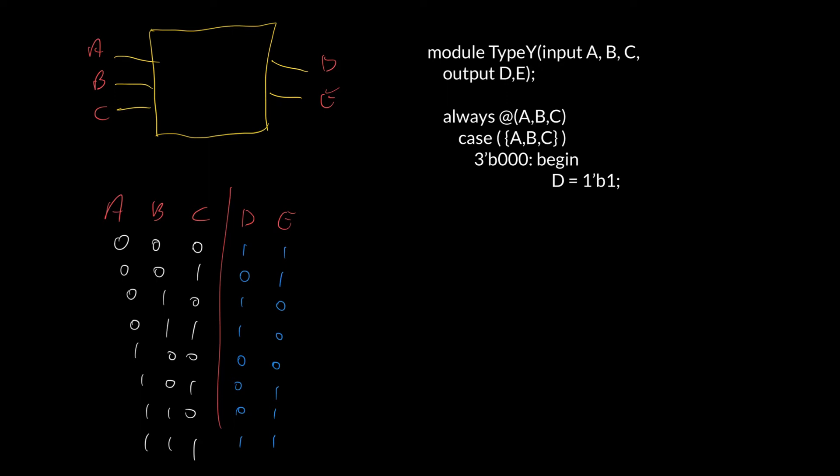Otherwise, it's going to have to truncate that 32-bit number to fit into the one-bit D, and you might get a compiler warning. So, I can do that, and then similarly, I can do this, and then I can do an end here. And that's fine. It's just a bit of typing.